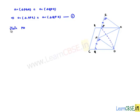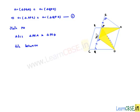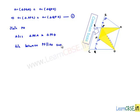Now, join PD. Consider triangles PFA and PFD. These two triangles lie between common parallels EF and AD. Since PF is part of EF, we can say they lie between parallel lines PF and AD, and the common base for them is PF.